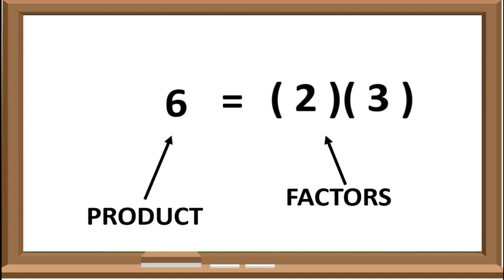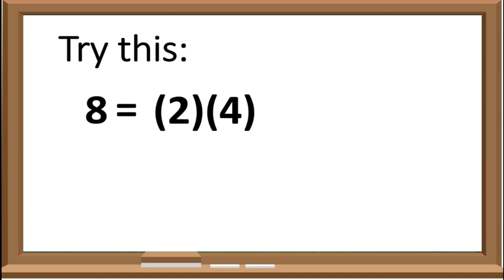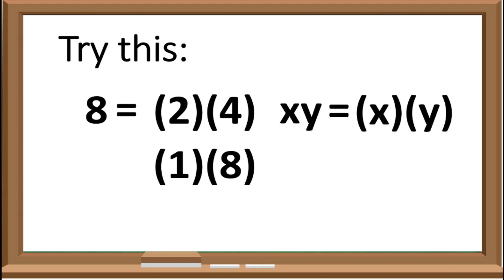Let us take these examples. What are the factors of 8? The factors of 8 are 2 and 4, or 1 and 8. How about xy? The factors are x and y, or y and x. Very good. Now you fully understand the concept of factoring. I think you are ready now in factoring an expression.